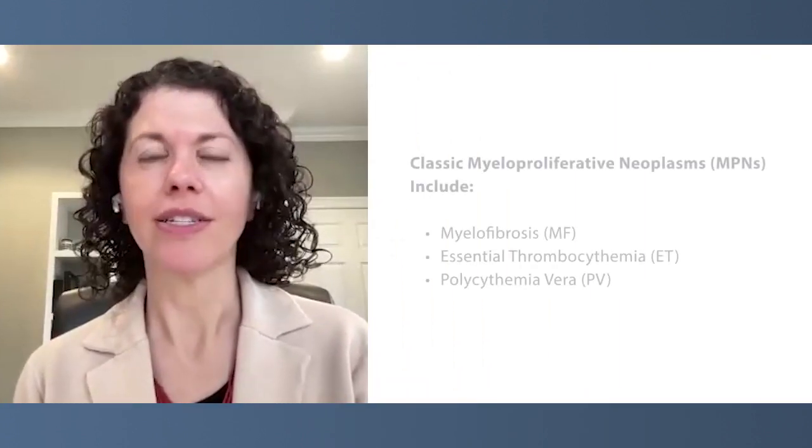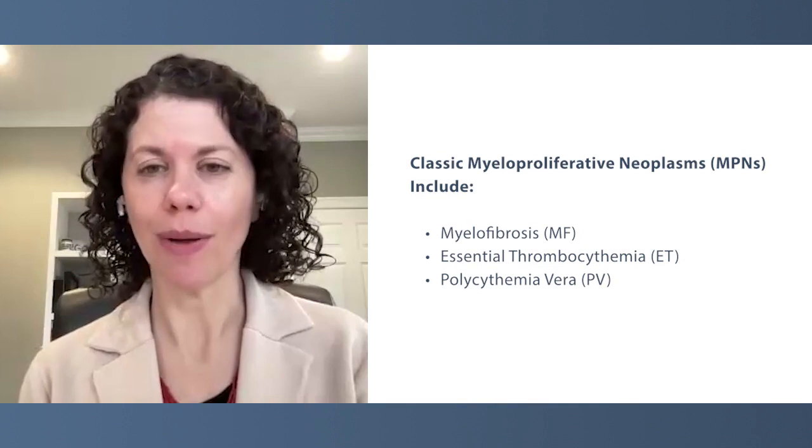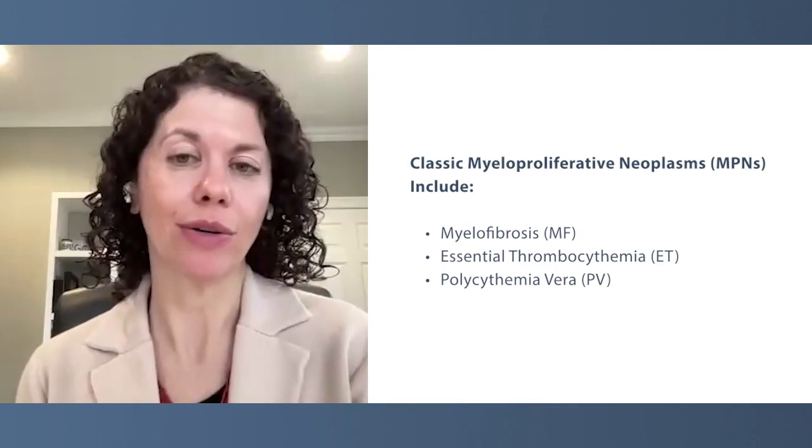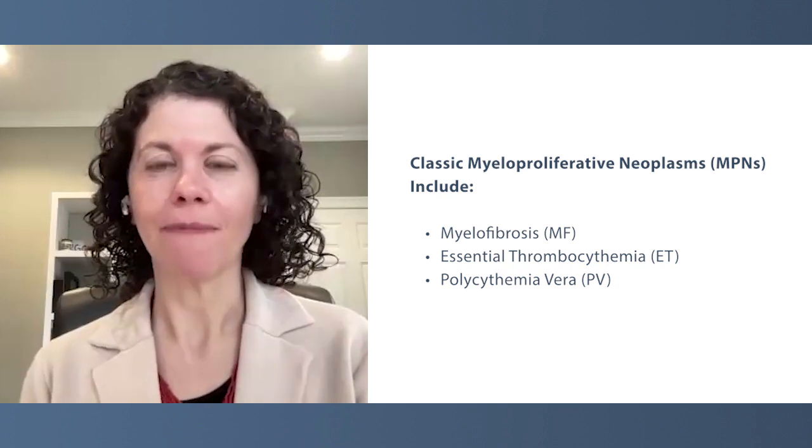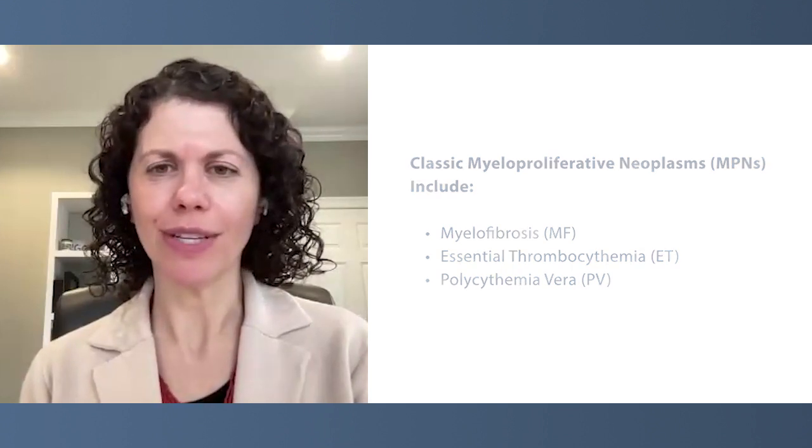Sometimes we suspect that a patient may have had another MPN previously, such as essential thrombocythemia or polycythemia vera, but they just weren't diagnosed. For example, you might look through a patient's chart and see that five or ten years ago they had really high platelets or very high red blood cell numbers. So you could say they were never diagnosed with ET or PV, but maybe they had that.